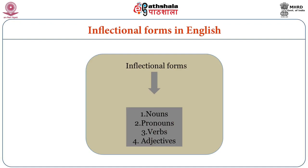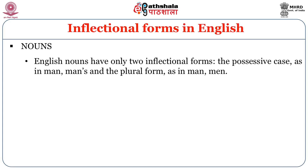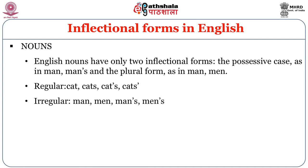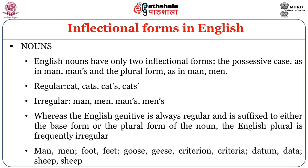Inflectional forms in English also cover nouns, pronouns, verbs, and adjectives. English nouns have only two inflectional forms: the possessive case — 'man,' 'man's' — and the plural form — 'man,' 'men.' Regular: 'cat,' 'cats,' 'cat's.' Irregular: 'man,' 'men,' 'man's,' 'men's.' The English genitive is always regular. The English plural is frequently irregular: 'man/men,' 'foot/feet,' 'goose/geese,' 'sheep/sheep,' 'datum/data.'